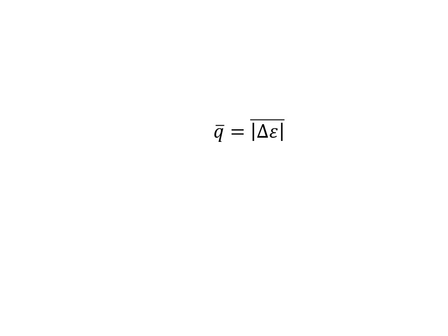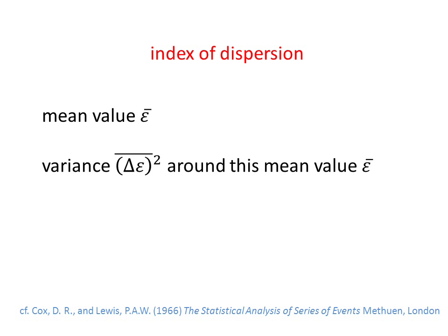The expression for the average exchange energy heat, denoted by the absolute value of delta epsilon bar, which a given oscillator of frequency ni exchanges with the other oscillators, is found by using the so-called index of dispersion. The index of dispersion gives the connection between the mean value, say epsilon bar in our case, and the variance delta epsilon squared bar around this mean value epsilon bar.